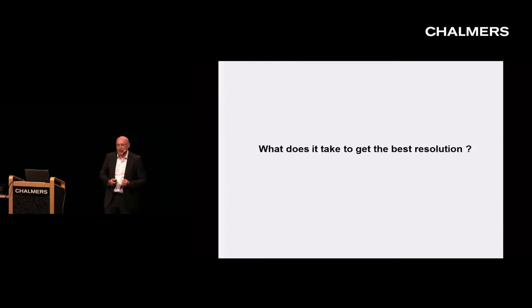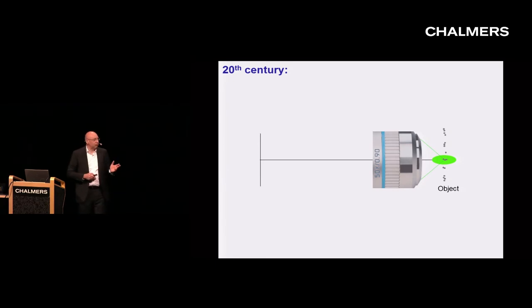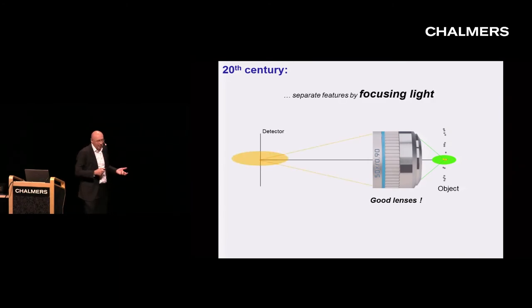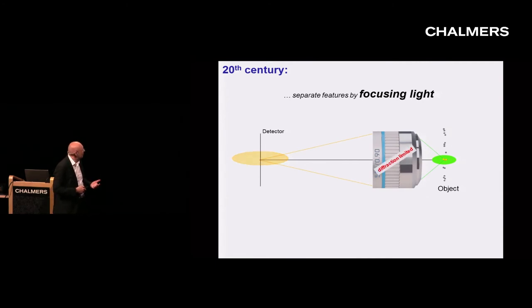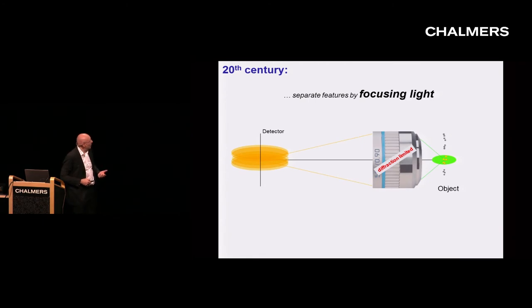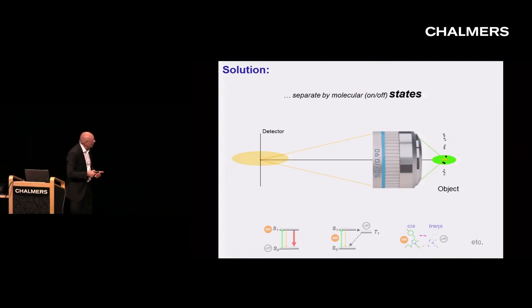What does it take to get the best spatial resolution? In the year 2000, the answer would have been straightforward: good lenses, because separation was done by the focusing of light. But if you separate by focusing of light, you are limited by diffraction. The solution was not to separate by focusing alone, but to separate by molecular states — by playing on-off with the molecules, making them separable. Even if they overlap in space, you can tell them apart: those are emitting and those are dark. There is a set of state transitions you can use to play this on-off game.